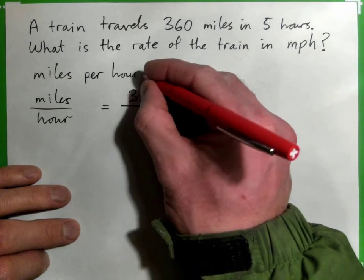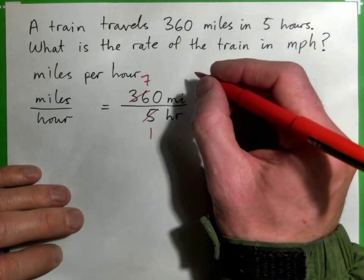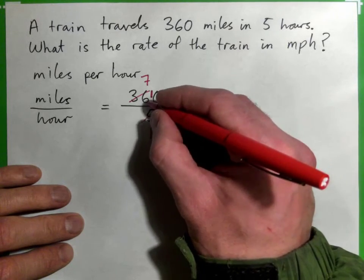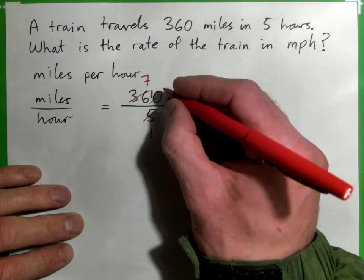7. And the remainder is 1. 5 into 10? 5 into 10 goes 2 times.